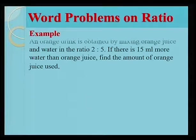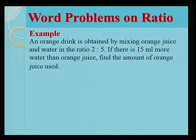Another example. An orange drink is obtained by mixing orange juice and water in the ratio 2 is to 5. If there is 15 ml more water than orange juice, find the amount of orange juice used.